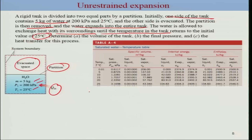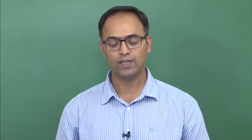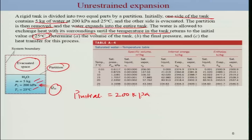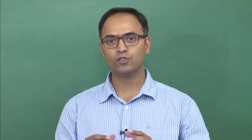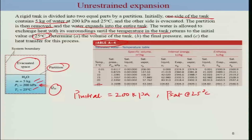For volume, we first identify the initial state. The initial pressure is 200 kPa and the temperature is 25°C. Looking at Table A4, the saturation pressure at 25°C is much lower than 200 kPa. Since the initial pressure is much higher than P-sat at 25°C, the system is a compressed liquid. We approximate the specific volume as V-f (saturated liquid) at 25°C, since we do not have an equation of state for compressed liquid.